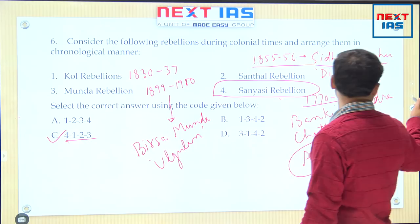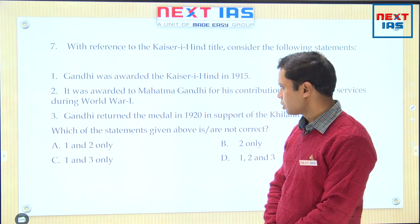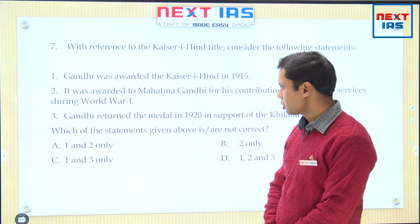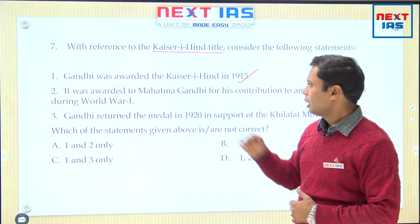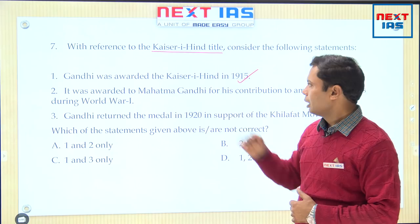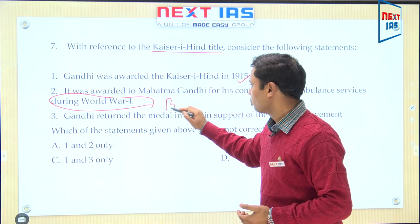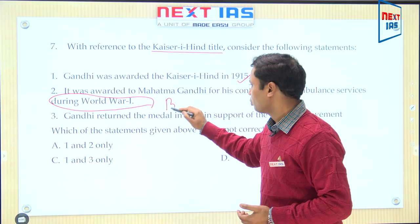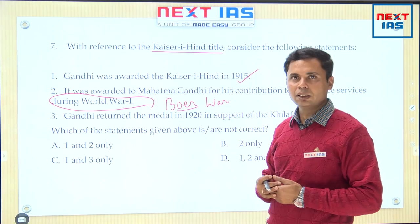With reference to Kaiser-i-Hind: Gandhi was awarded the Kaiser-i-Hind in 1915 — that is correct, the title was given to Gandhi after his arrival from South Africa. It was awarded to Mahatma Gandhi for his contribution to ambulance services during World War I — this is wrong, because the Kaiser-i-Hind title was given to Gandhi as a result of his contribution in the Boer War in South Africa.